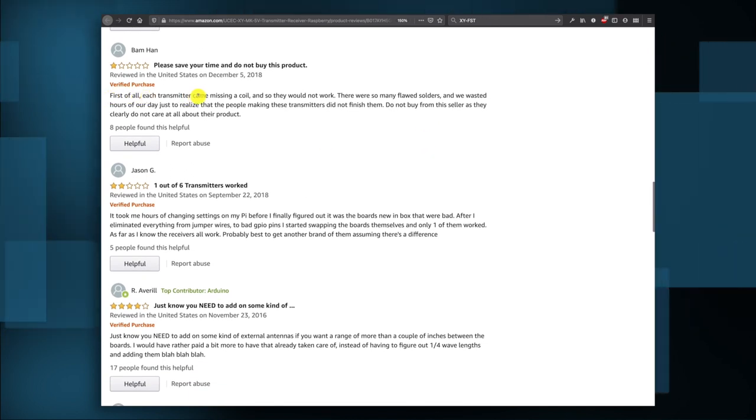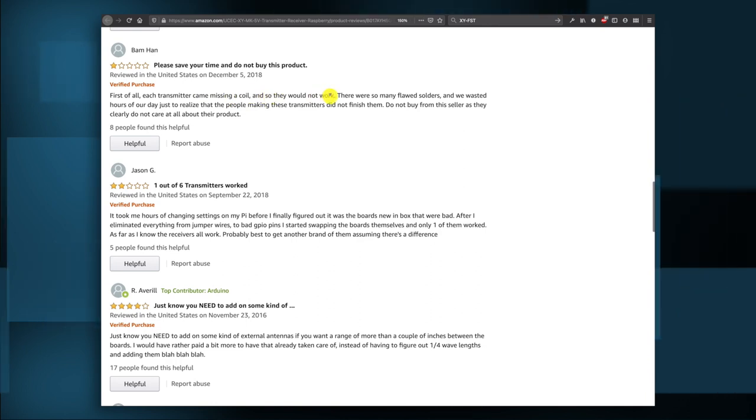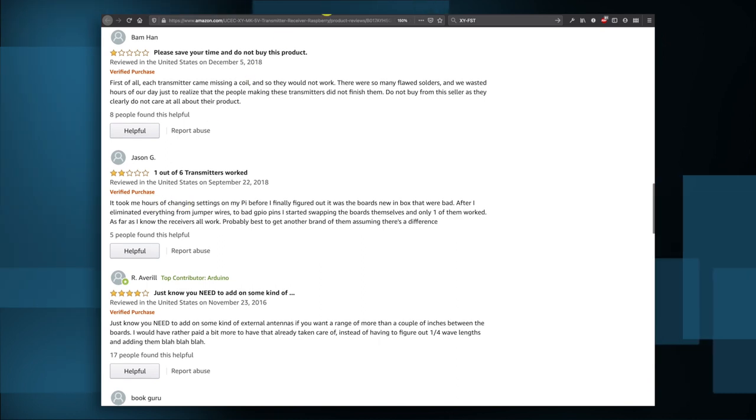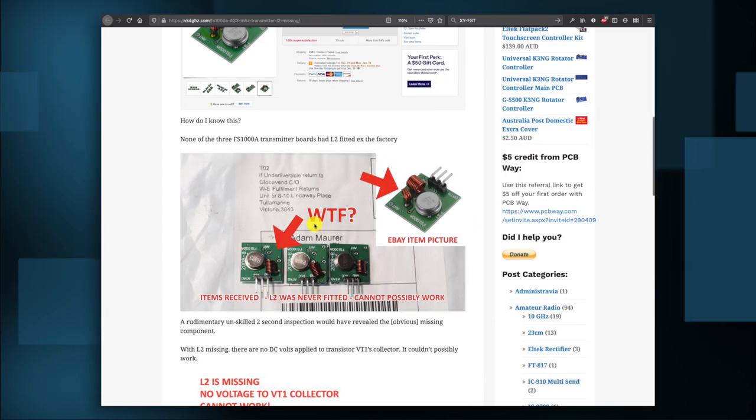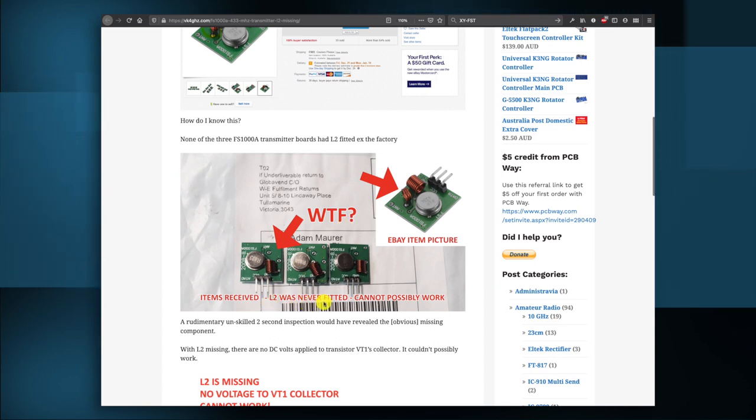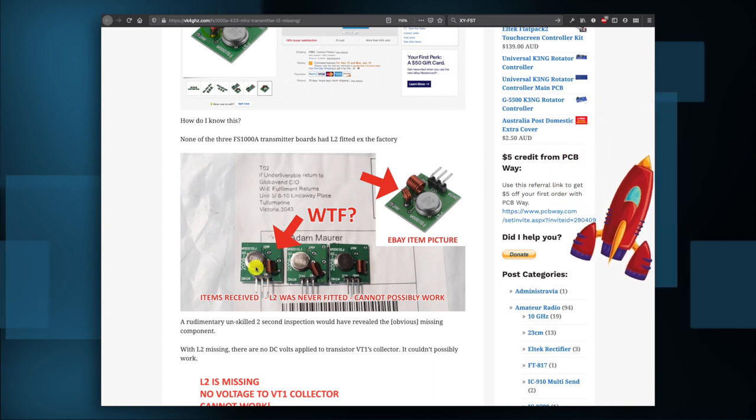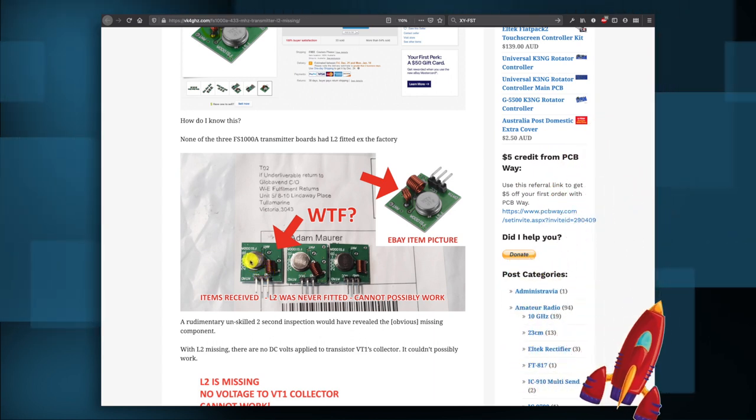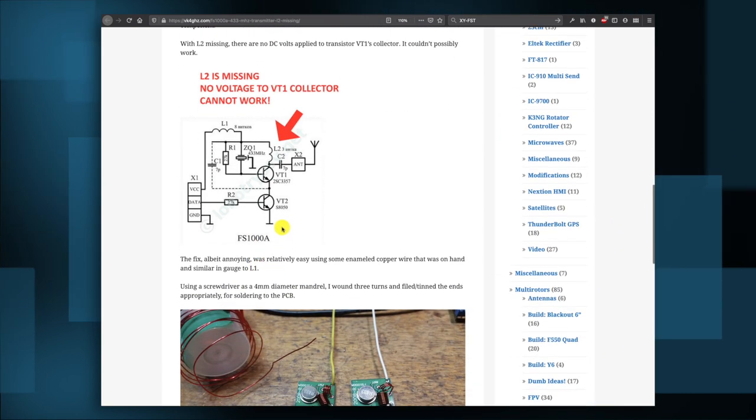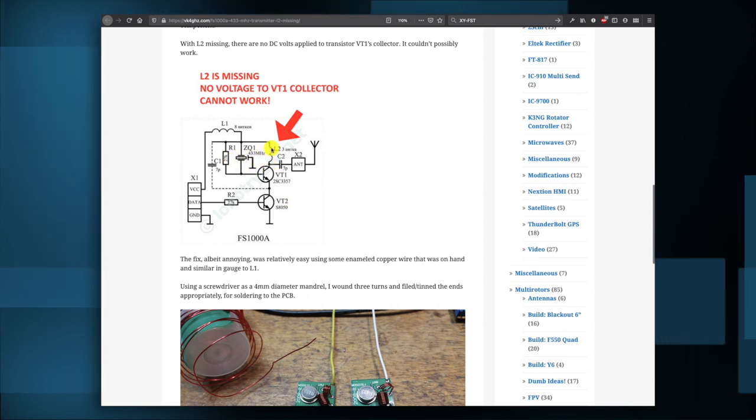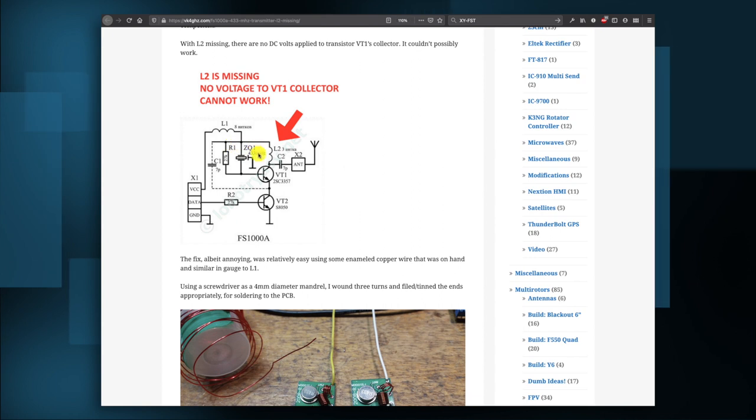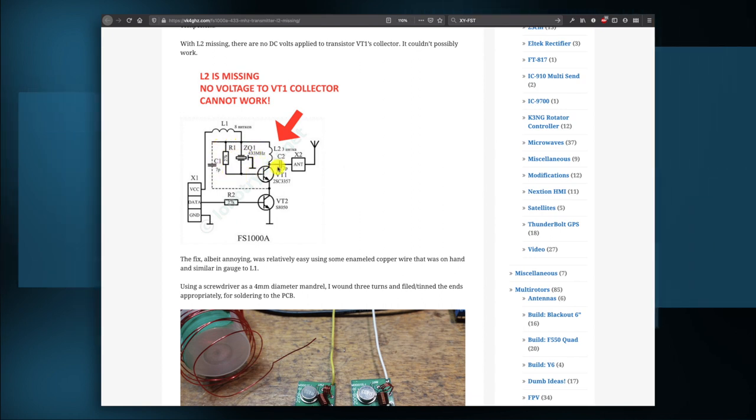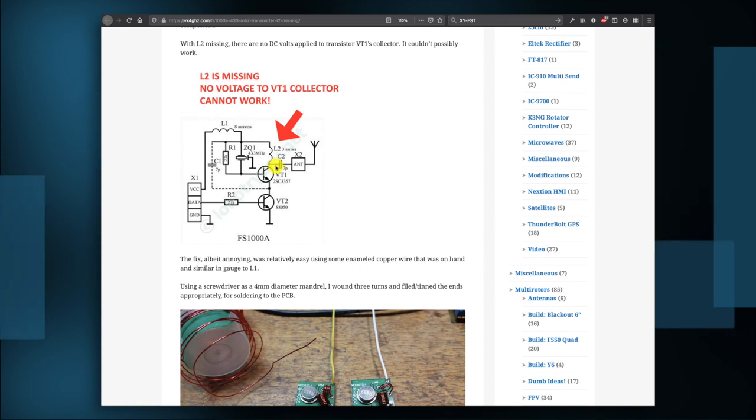First of all, each transmitter came missing a coil and so they would not work. It took me hours. Here's one from someone else who bought these things. What the... L2 was never fitted, cannot possibly work. Yeah, these are exactly the same as I have. The only difference is that these are 433 modules and I have the 315 modules. Here's that little scheme again we saw before, and indeed this coil seems to be missing. It's used for feeding this transistor so that this oscillator will work in the first place. So without this coil not much will be going on and it will not work.